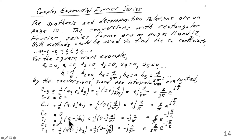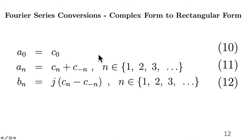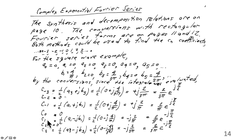c0 equals 0. c1, for n equals 1, using those conversion formulas, is found from (a1 minus j·b1) over 2. So c1 is (a1 minus j·b1) over 2. And b1 again is 4 over pi, but now the formula changes sign, so we get minus j times 2 over pi. The magnitude is still 2 over pi, but the phase shift is now minus j, which is e to the minus j pi over 2.